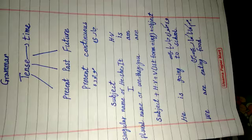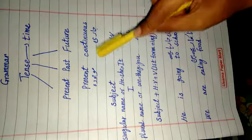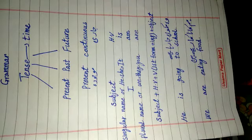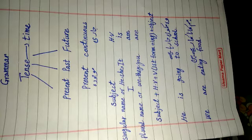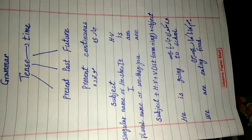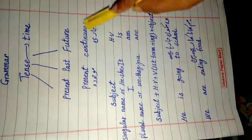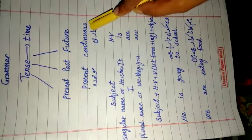In Urdu, the recognition of present continuous tense is that we use raha hai, rahi hai, or rahe hai at the end of the sentence. These endings — raha hai, rahi hai, rahe hai — show the continuity of action.